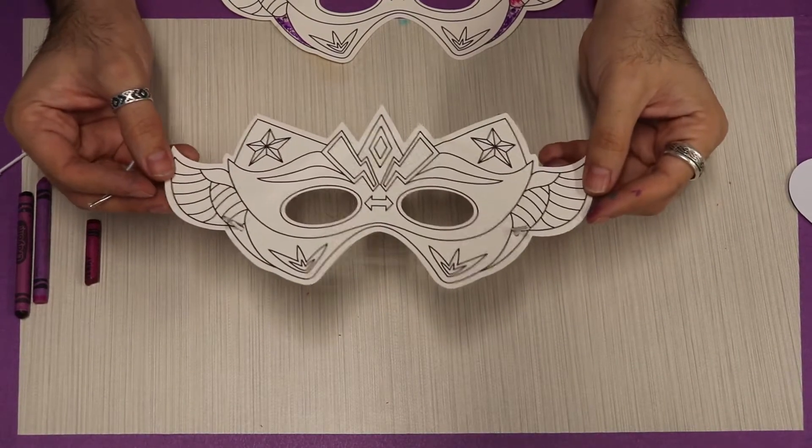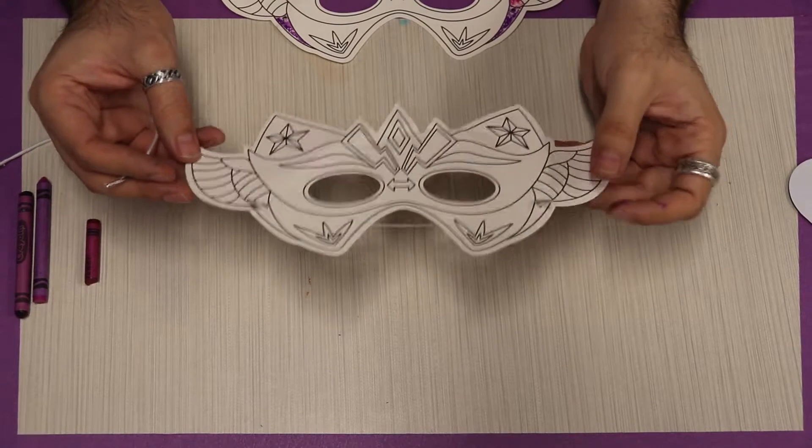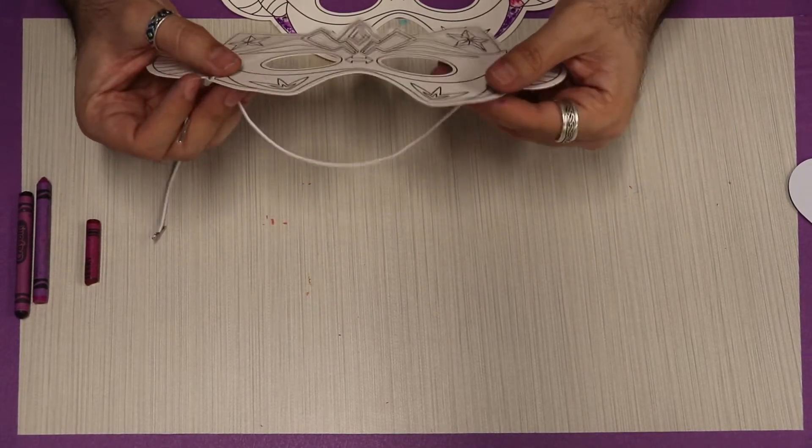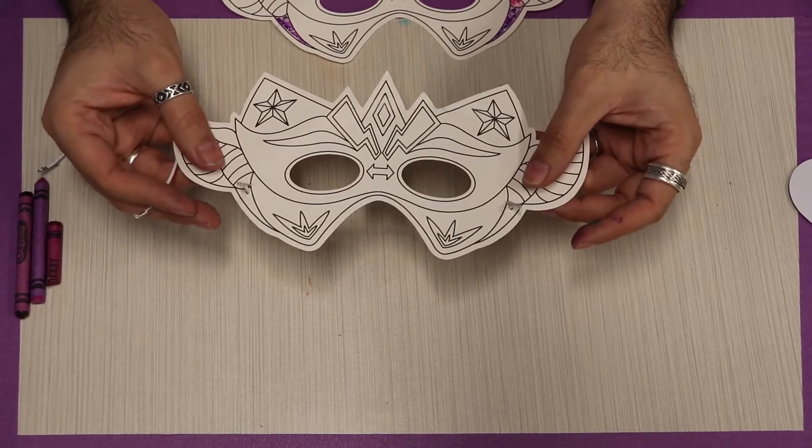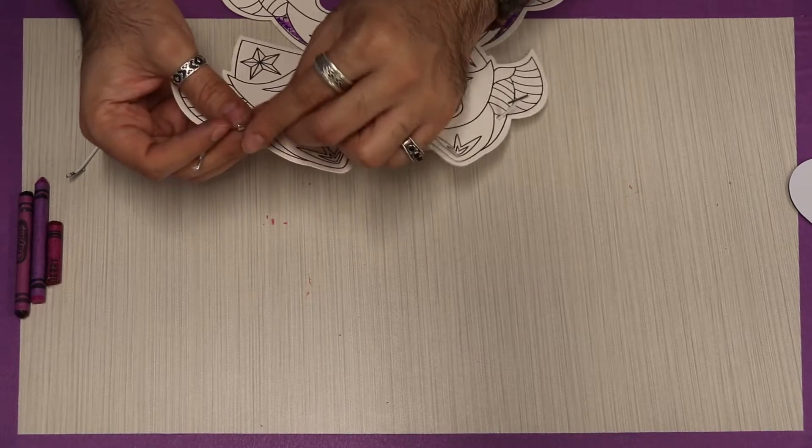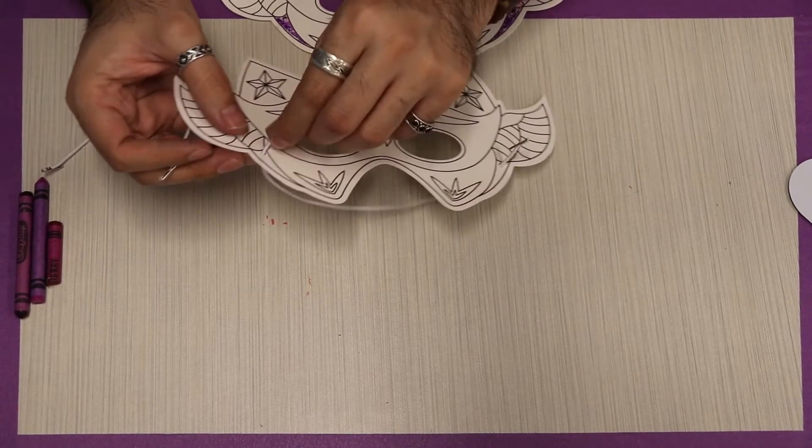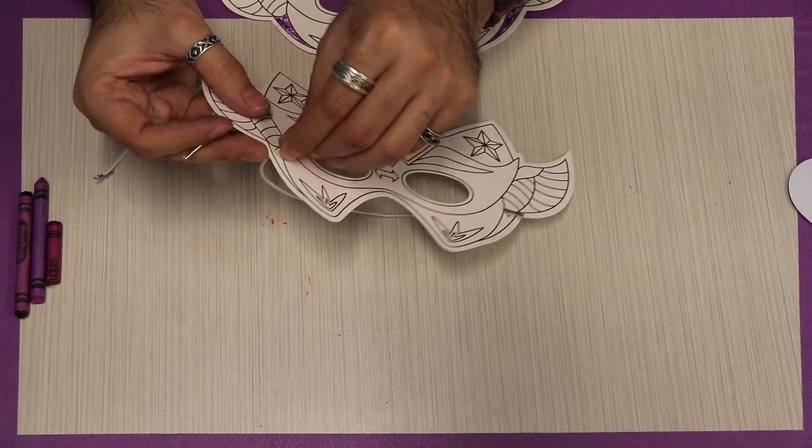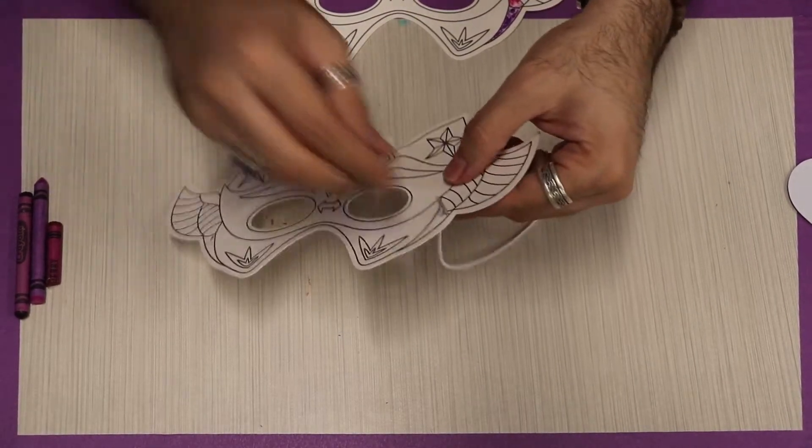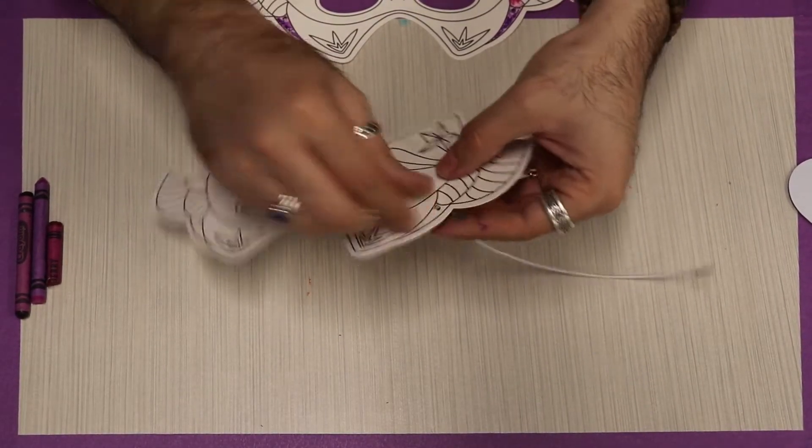As you see, they come completely blank for you to design your own wrestler or superhero or whatever you would like. Now the only thing I do recommend on this one is these little tabs, these little metal tabs.